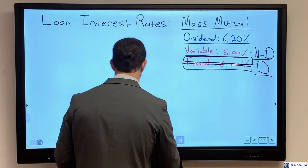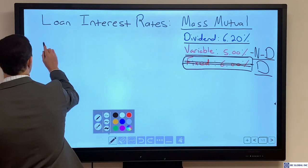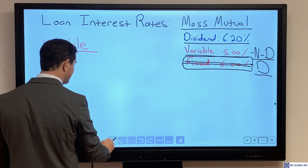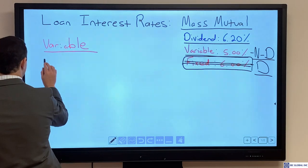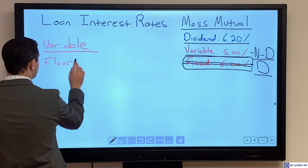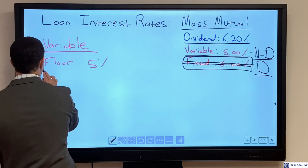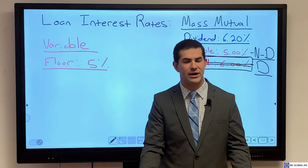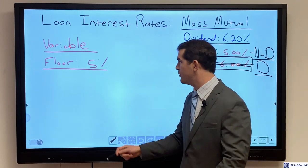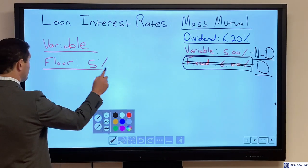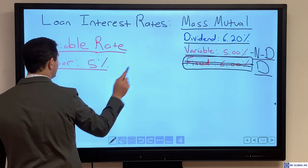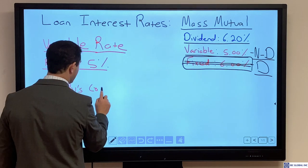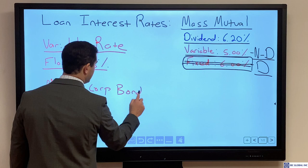Let's get into the variable loan rate and how it works, because when I hear the term 'variable,' I think that rate can just shoot up on me. What the variable rate is tied to: MassMutual as a company sets a floor for their variable loan rate of 5% — that is as low as it can go for all policyholders. It's been there for several years as the interest rate environment has been very low. Their variable rate is tied to Moody's corporate bond index average.